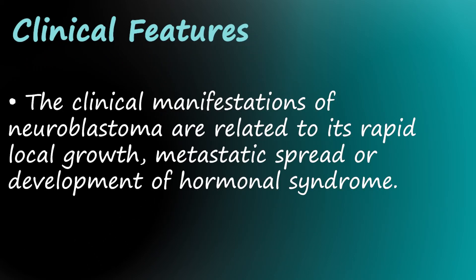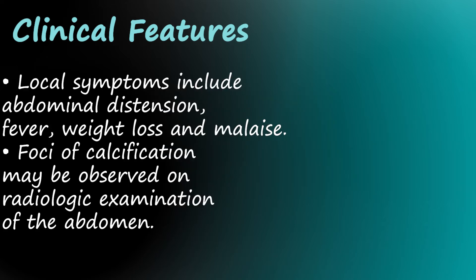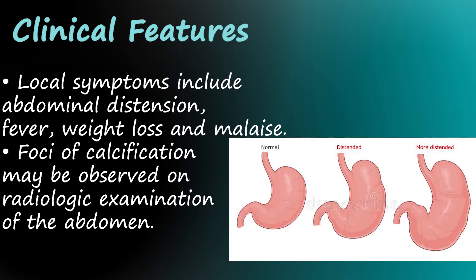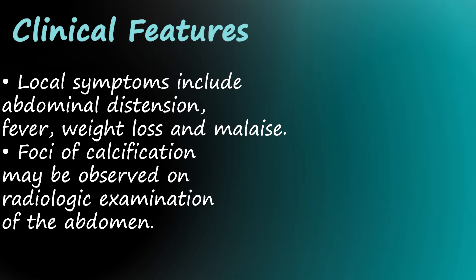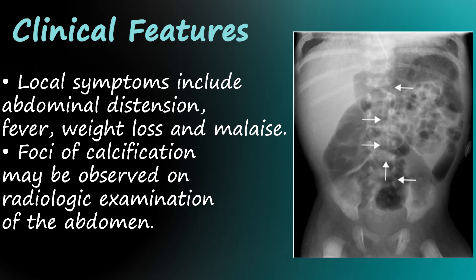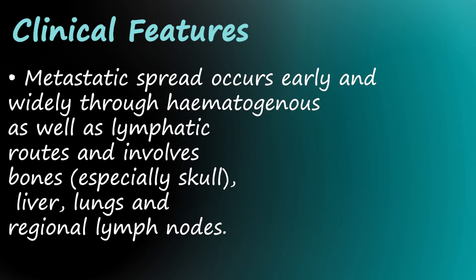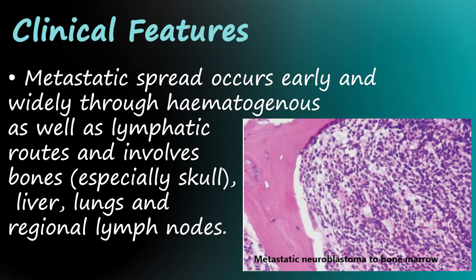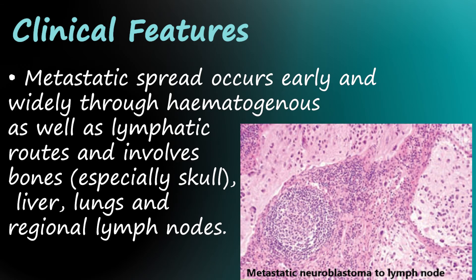Clinical features. The clinical manifestations of neuroblastoma are related to its rapid local growth, metastatic spread, or development of hormonal syndrome. Local symptoms include abdominal distention, fever, weight loss, and malaise. Foci of calcification may be observed on radiologic examination of the abdomen. Metastatic spread occurs early and widely through hematogenous as well as lymphatic routes and involves bones, especially skull, liver, lungs, and regional lymph nodes.